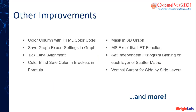Other key improvements include Color Columns with HTML Color Code, Saving Graph Export Settings in a Graph, Tick Label Alignment, Color Blind Safe Colors, Brackets and Formula Masking in 3D Graphs, Microsoft Excel-like Let Function, Setting Independent Histogram Binning on each layer of Scatter Plot Matrix, and Vertical Cursor for Side-by-Side Layers.